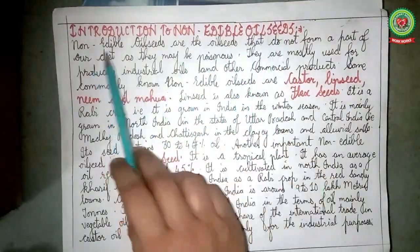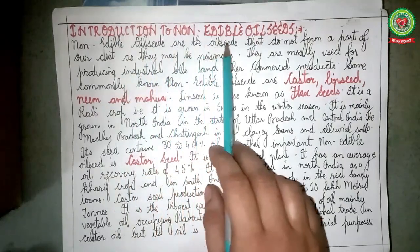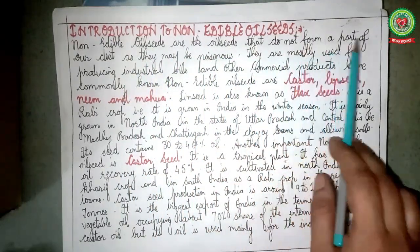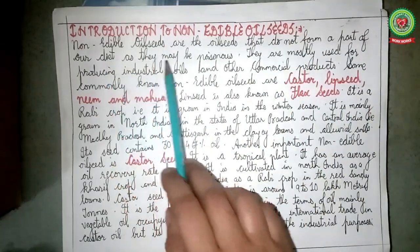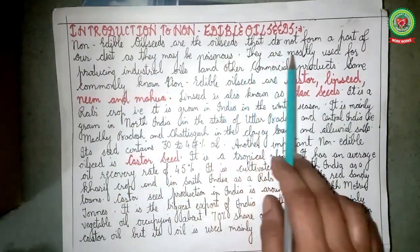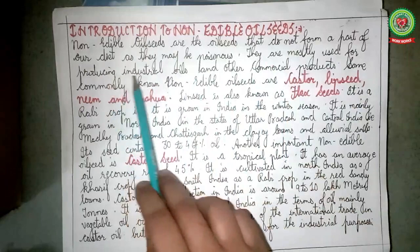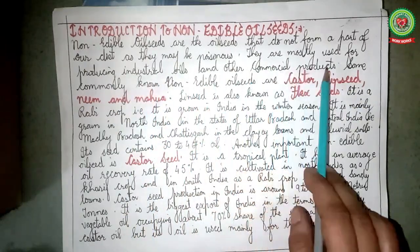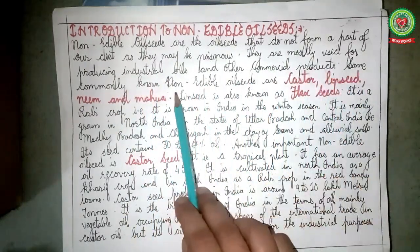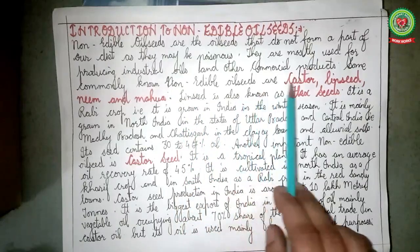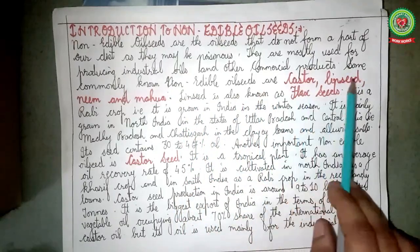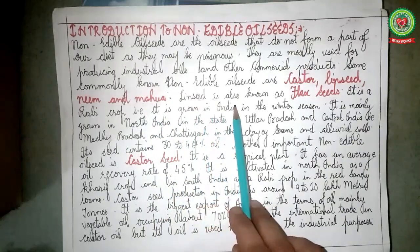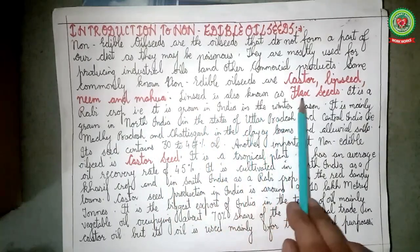Now coming back to our main topic — non-edible oil seeds. Non-edible oil seeds are oil seeds that do not form a part of our diet as they may be poisonous. They are mostly used for producing industrial oils and other commercial products. Some commonly known non-edible oil seeds are castor, linseed, neem, and mahua.